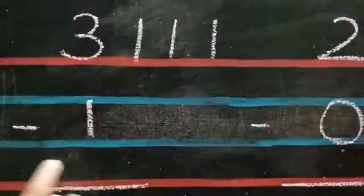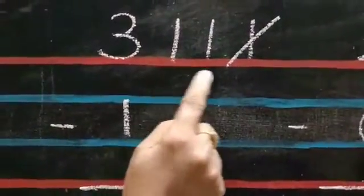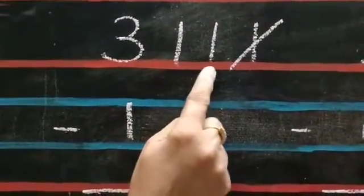Minus 1 means take away 1. Now, check how many lines are left over. 1, 2. So, the answer is 2.